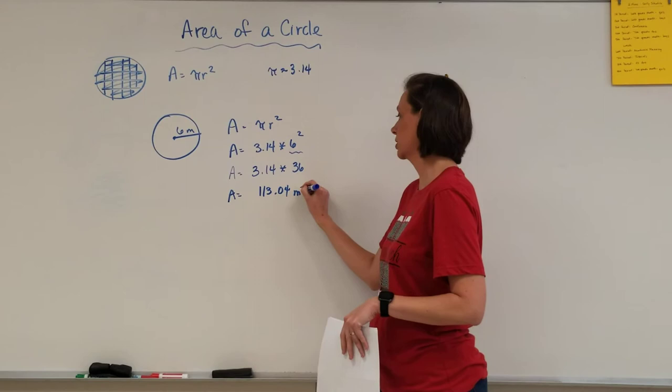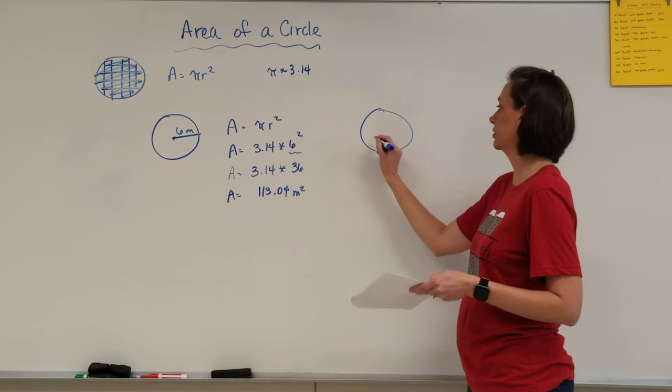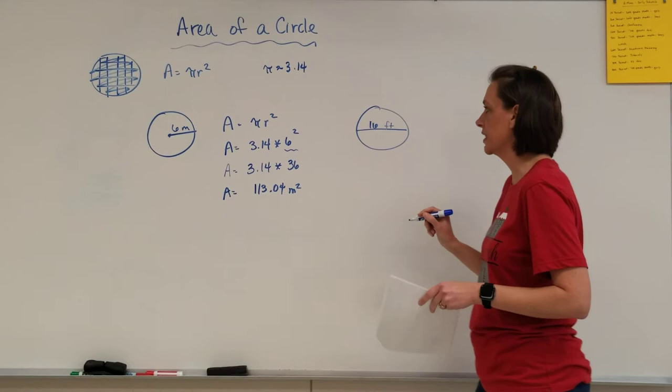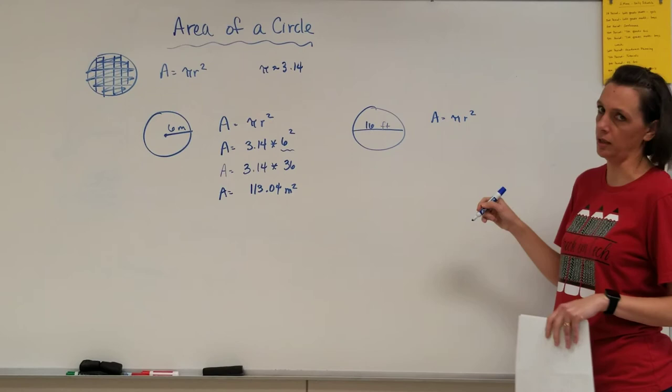Be very careful, because sometimes you're going to have a diameter. If this has a diameter of 16 feet, then your formula says pi r squared, not pi d, because this is not times two, it is times itself.